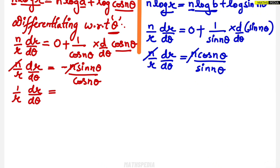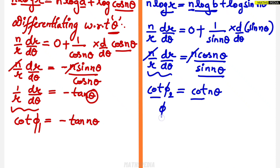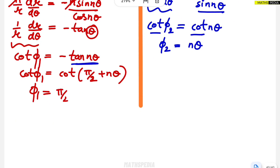Now, −sin/cos can be written as −tan, and cos/sin is cot. Since (1/r)(dr/dθ) = cot φ, we have: cot φ₁ = −tan(nθ). Using the identity cot(90° + θ) = −tan θ, this becomes cot φ₁ = cot(π/2 + nθ), so φ₁ = π/2 + nθ. For the second equation: cot φ₂ = cot(nθ), so φ₂ = nθ.